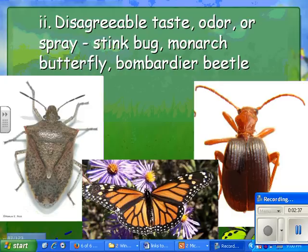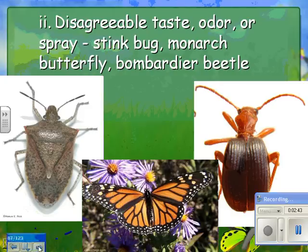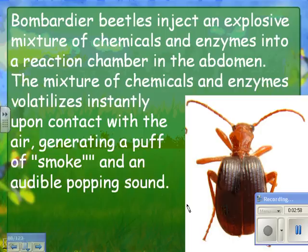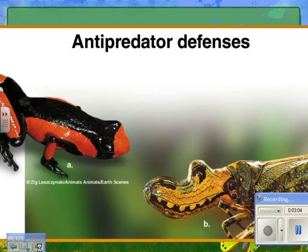There's also disagreeable taste as a defense. The monarch butterfly tastes bad, and the stink bug and bombardier beetle do something unpleasant to whatever eats them. The bombardier beetle injects an explosive mixture of chemicals and enzymes into a reaction chamber in its abdomen, which volatilizes instantly upon contact with air, generating a puff of smoke and an audible popping sound to scare off predators.